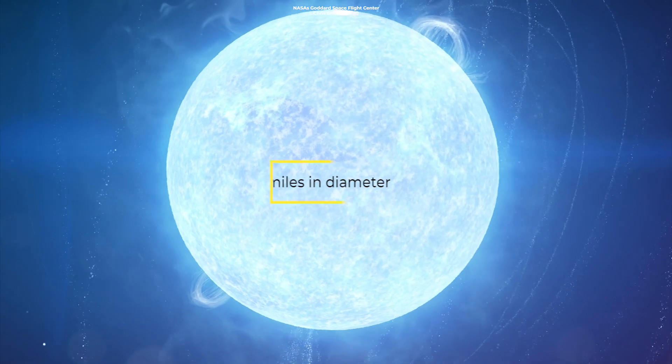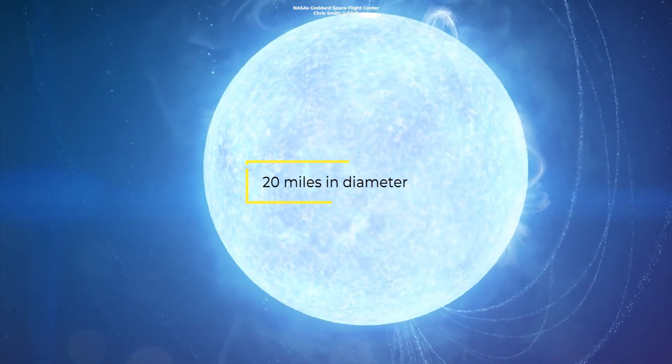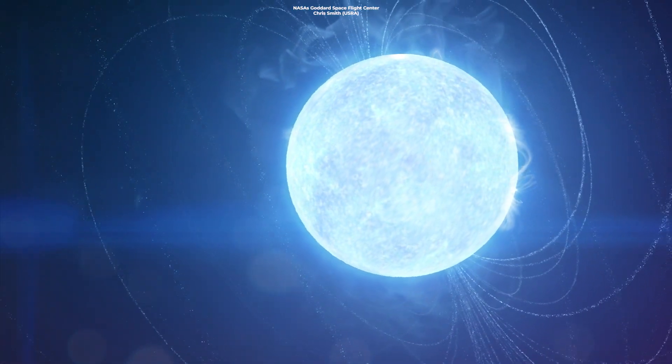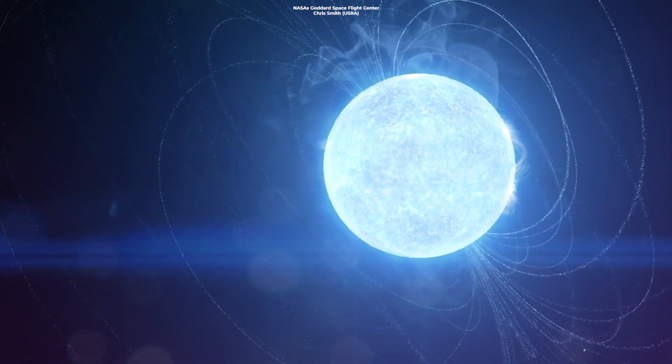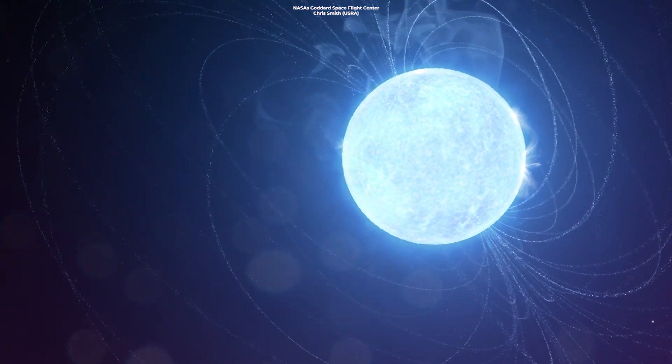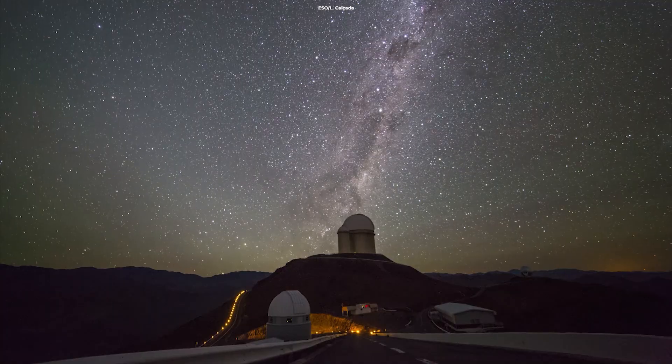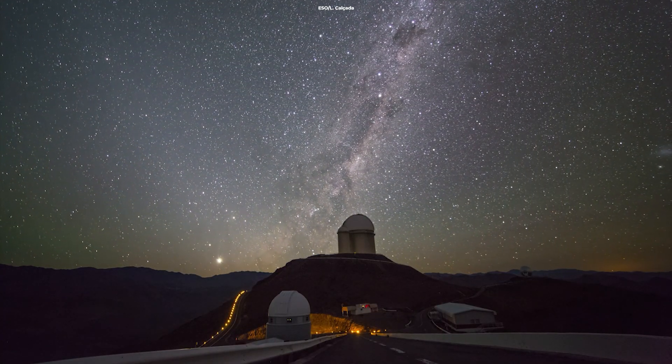Neutron stars can be as small as 20 miles in diameter, but they are so dense that a teaspoon-sized scoop would weigh more than Mount Everest.